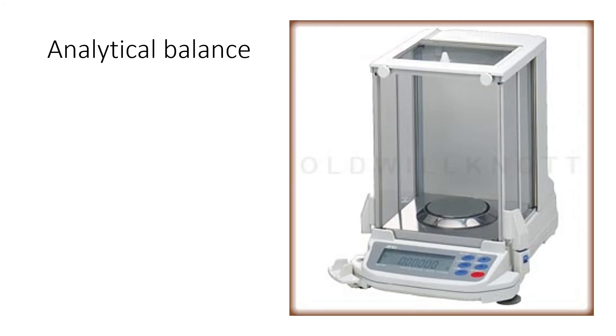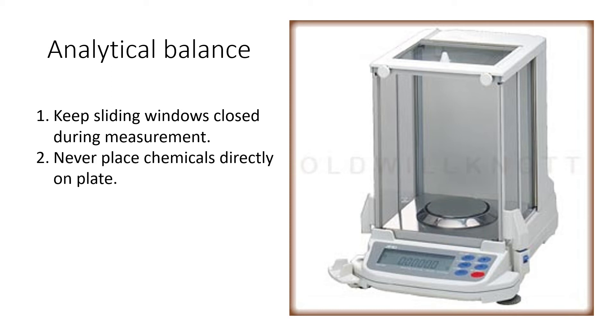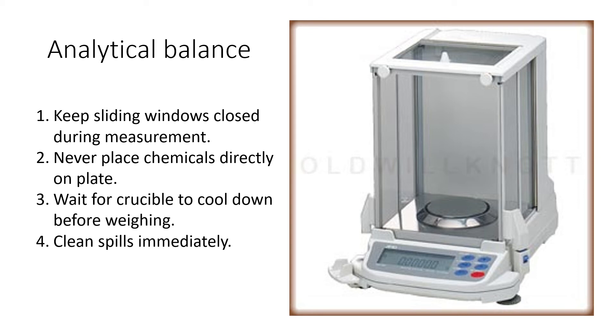We've already seen the video and practiced using the analytical balance, but just a few reminders. Whenever you're taking a measurement, you want to keep the sliding windows closed so that you don't get any drafts or air currents affecting your reading. Never place chemicals directly on the plate - always put them on a container or paper. Always wait for the crucible to cool down before you weigh it. If you put the crucible in and it's too hot, it's going to create a draft of air called convection, and that's going to make your display drift a lot. Very important: clean spills immediately. Don't wait till later, because other students might be wanting to use the balance, or you could allow some corrosion to happen if you spill chemicals on the metal plate.